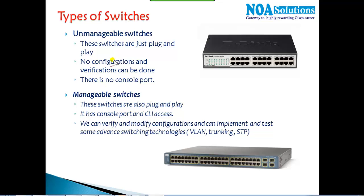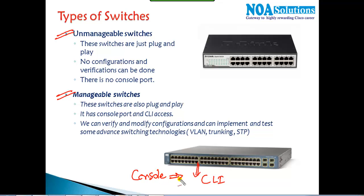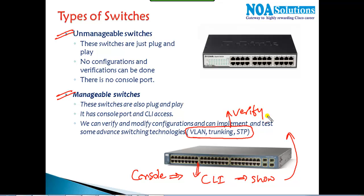In switches we have two categories: unmanageable switches and manageable switches. The major difference is that manageable switches have a command line — they have a console port just like routers — and we can verify show commands and do advanced switching concepts like VLANs, trunking, and spanning tree. We can verify how they work and optimize them.